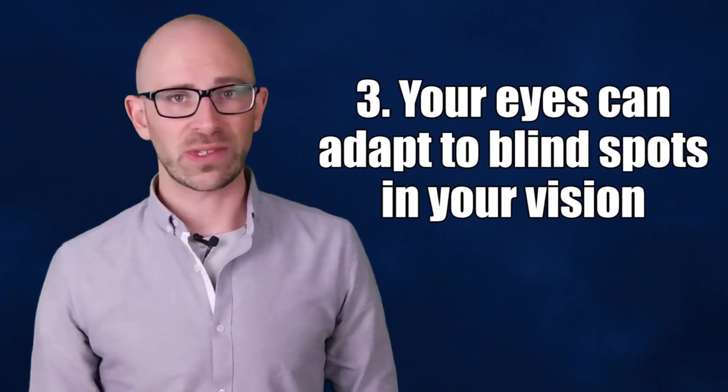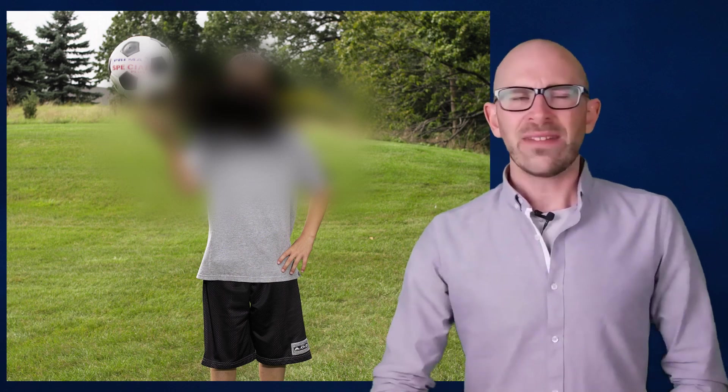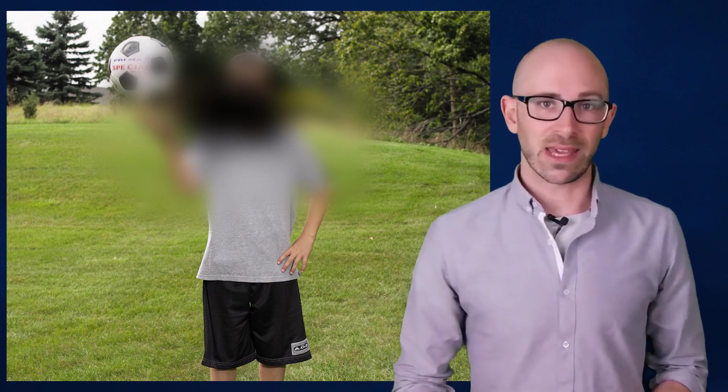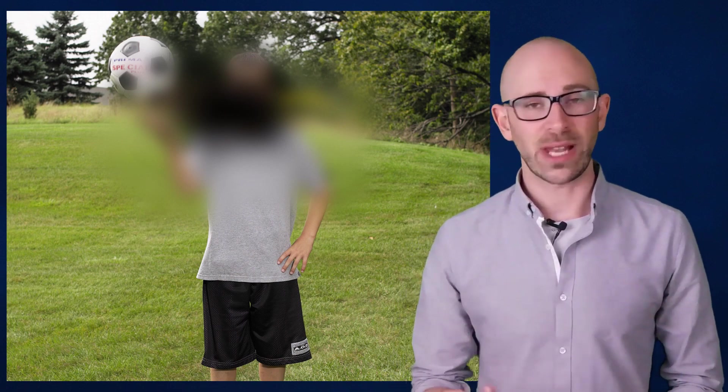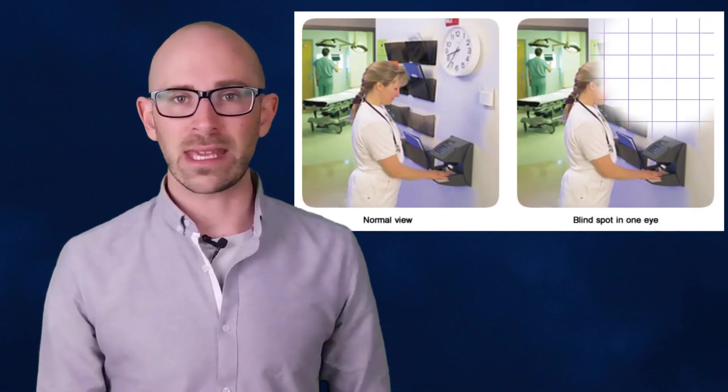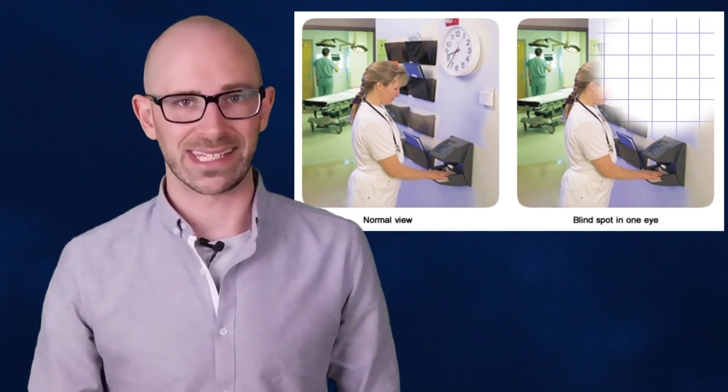Your eyes can adapt to blind spots in your vision. Certain eye conditions such as glaucoma and certain general health conditions such as having a stroke can lead you to developing blind spots in your vision. This would be extremely debilitating if it wasn't for your brain and your eyes' ability to adapt to make these blind spots disappear. It does this by suppressing the blind spot in your affected eye and letting the other good eye fill in the gaps. It is adaptation like this that makes your eyes so resilient.